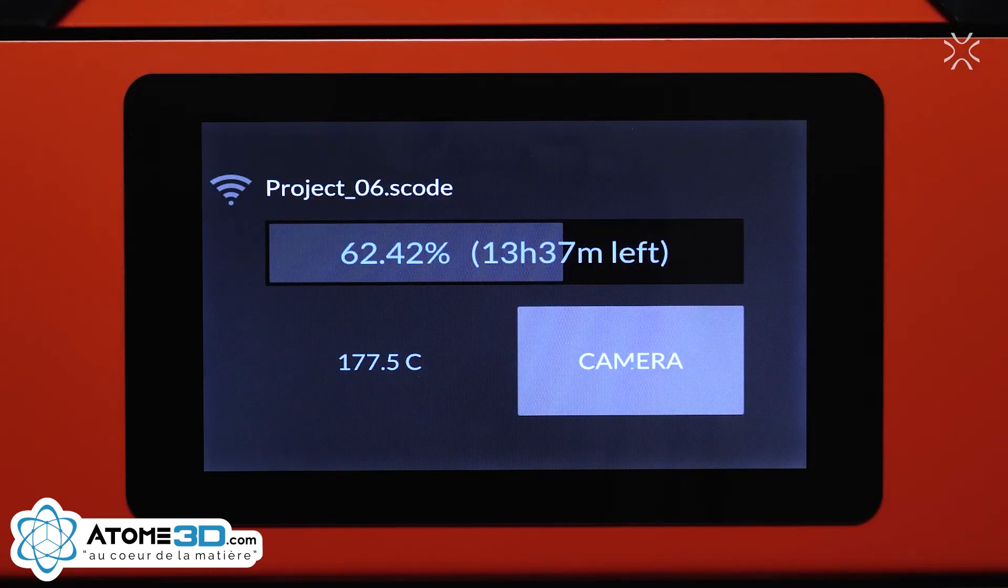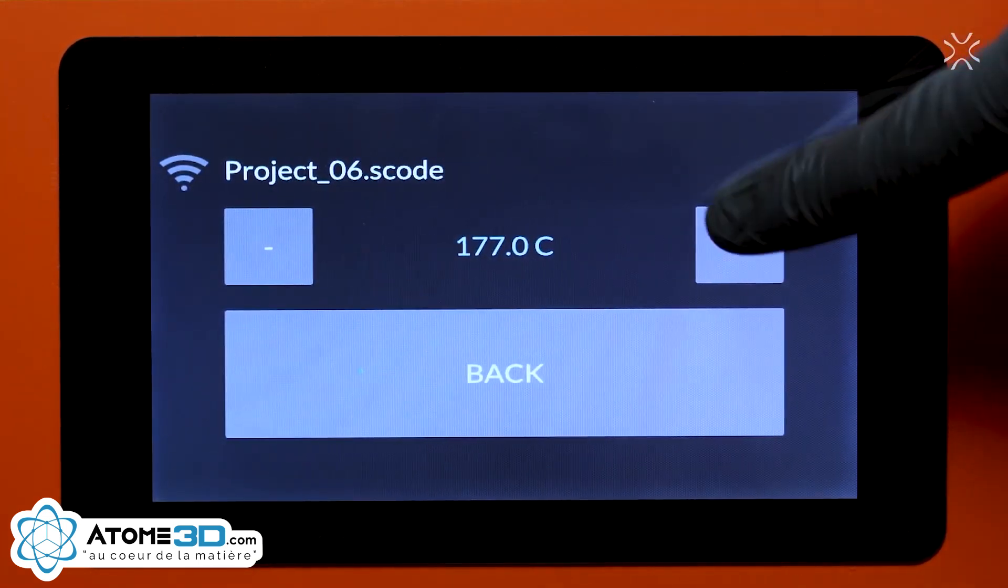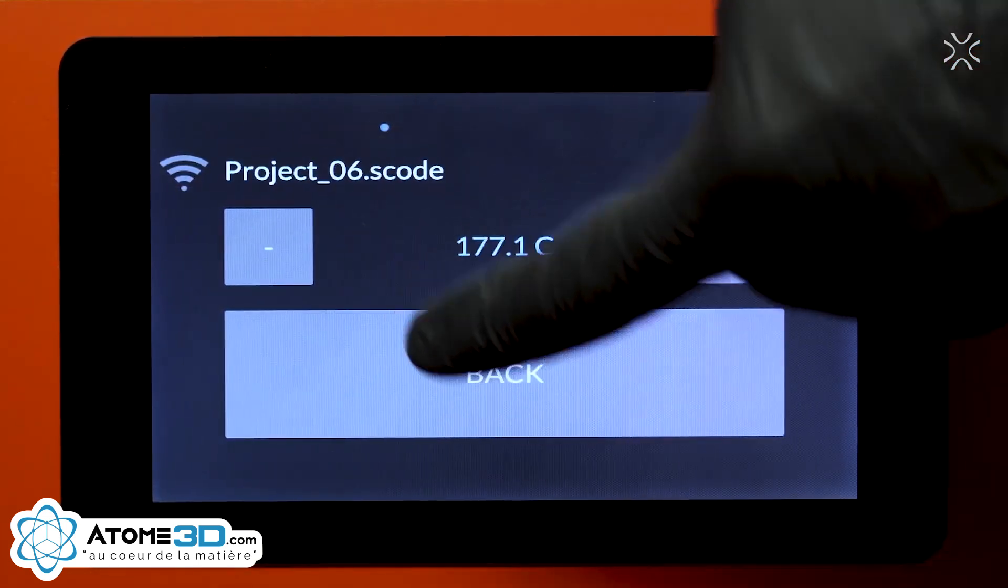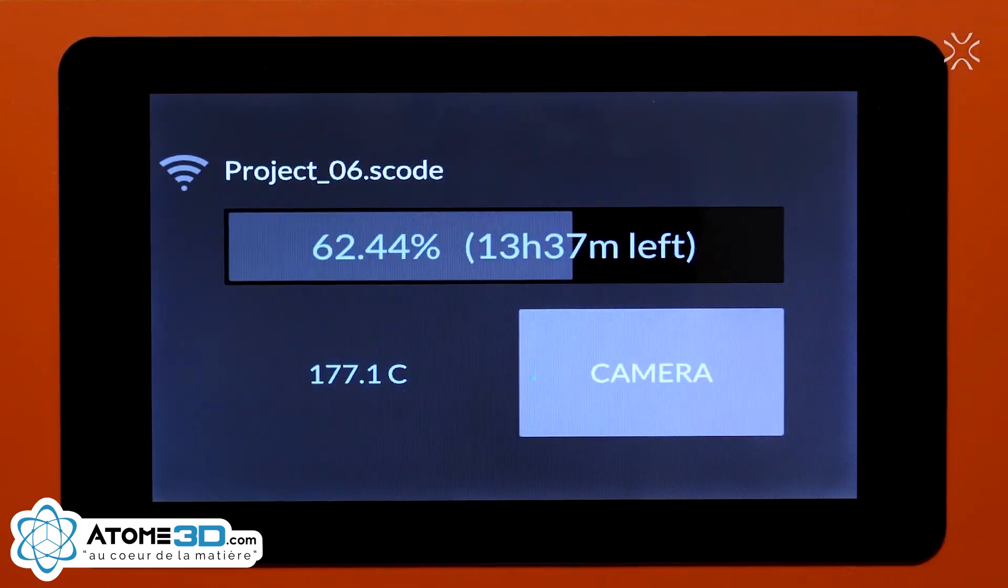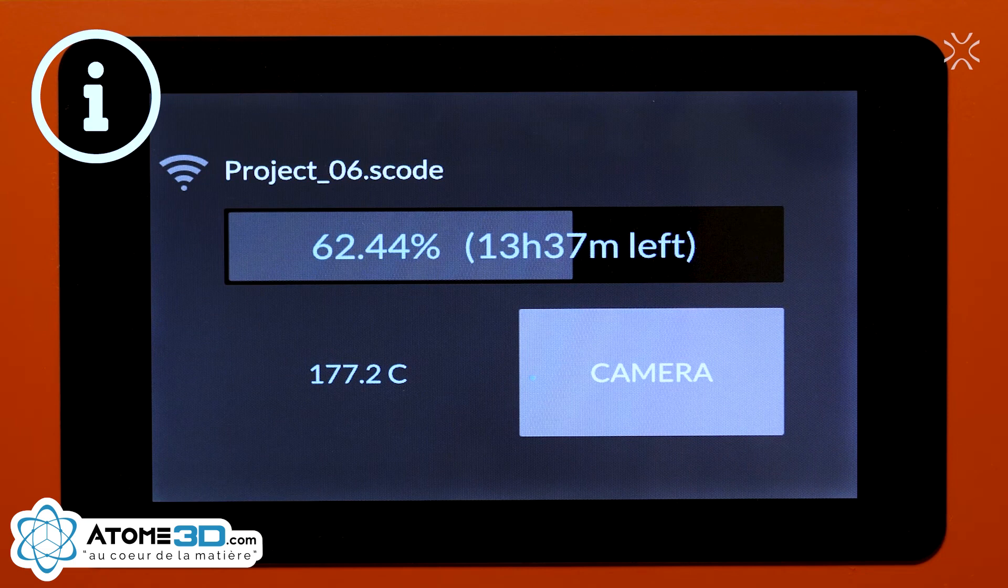During printing, you can also change the printing temperature. Just click the screen where the temperature is displayed, and then make it higher or lower using arrows. For regular use, we don't recommend changing the temperature because the printer is calibrated for all our materials. Changing the temperature may affect print quality.